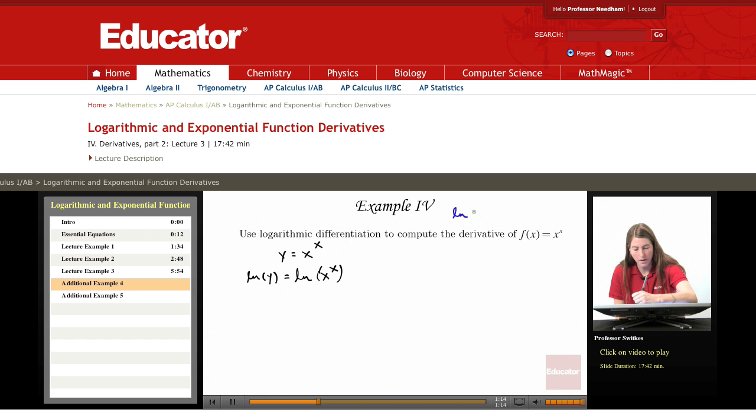So recall that if you have ln(a^r), you can pull the factor of r out in front and have r·ln(a). And so that's what we'll do here. We have ln(x^x). We can pull a factor of x out in front and have x·ln(x).